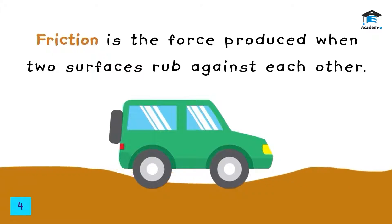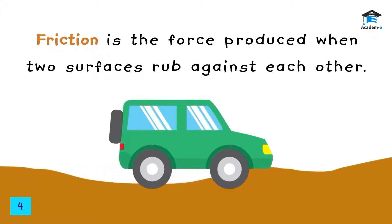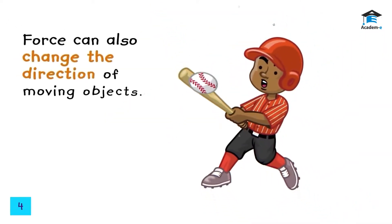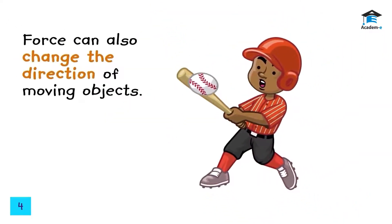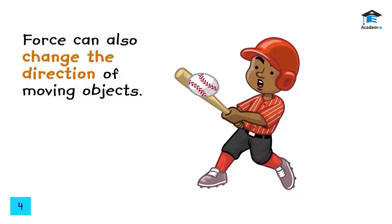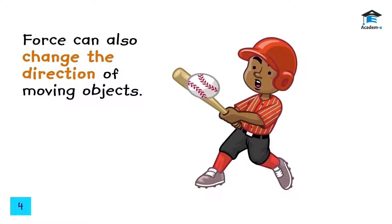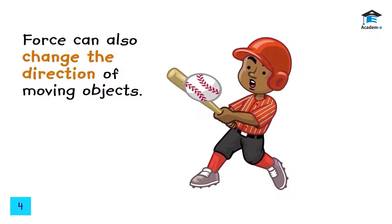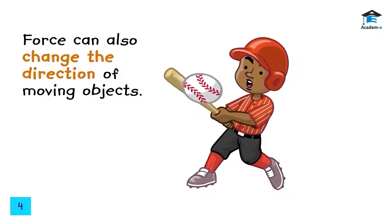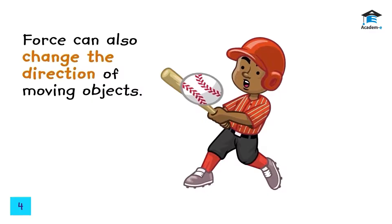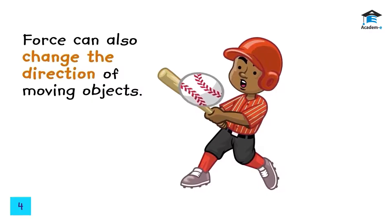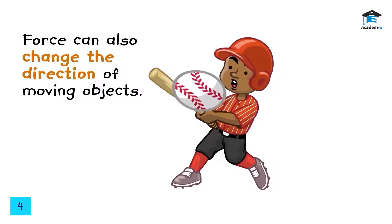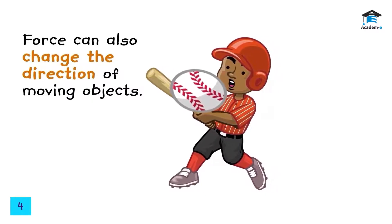Friction on a rough road may also slow down the movement of a vehicle. Friction is the force produced when two surfaces rub against each other. Force can also change the direction of moving objects — for example, a boy changes the direction of a moving ball by hitting it, exerting a pushing force on the ball.